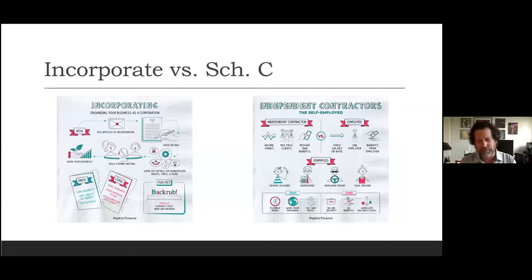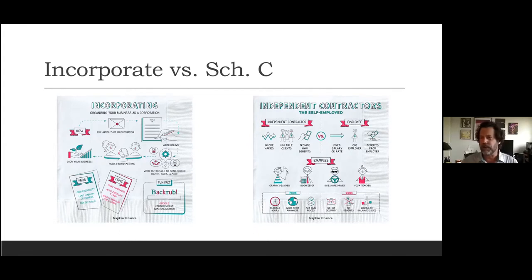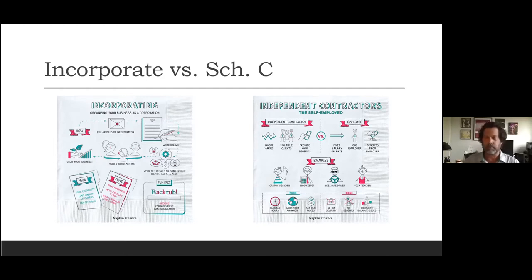Of all the selections, probably the one most of you would want is a single-member limited liability corporation. If two of you want to work together, each could form your own single-member LLC rather than going through the expense of a separate entity and filing all those taxes—it can all be done inside your own Schedule C. A great visual resource I use for artists and students is Napkinfinance.com—they have everything you can imagine in easy visual form. These PowerPoint slides will also be available for John to share with everyone.